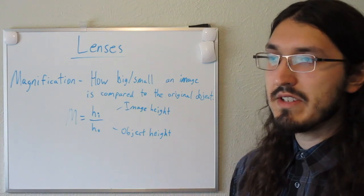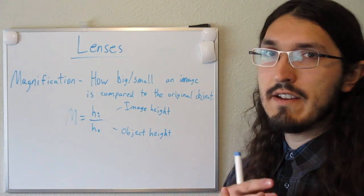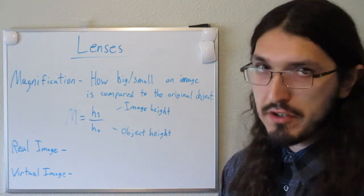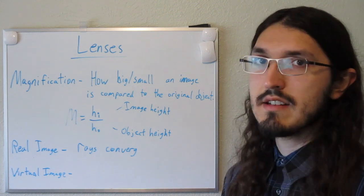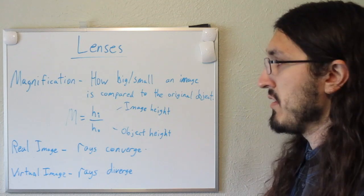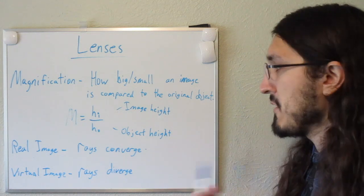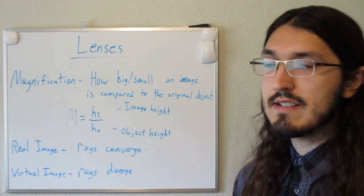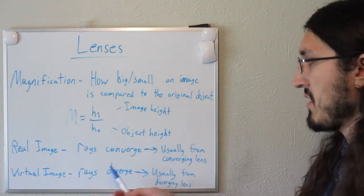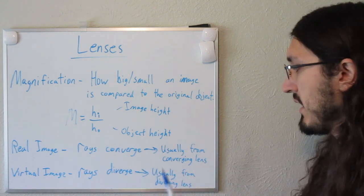Now I want to talk about the types of images that can be produced from different lenses. We classify images as real or virtual and inverted or non-inverted. Real images appear whenever light waves converge. Virtual images occur whenever rays appear to diverge. Generally speaking, real images will be created from converging lenses and virtual images will be made from diverging lenses, although there are some cases where virtual images can be made from a converging lens.